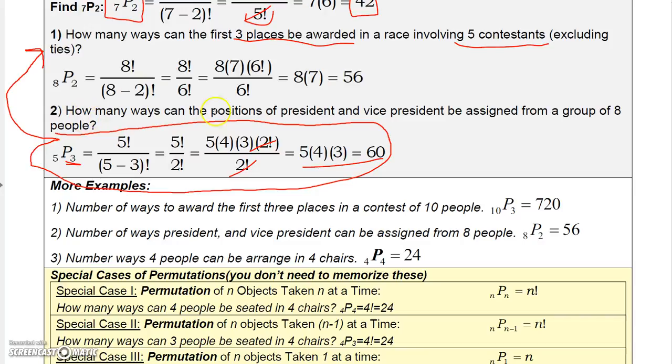Now, the next one says, how many ways can the positions of president and vice president be assigned from a group of eight people? I can't assign the same person to both positions, so repetition is not allowed. And order would matter because if A is president and V is vice president, then wouldn't it be different if B was president and A was vice president, even though we're using the same two people? The order does matter here because we're assigning them to positions. Since we're assigning them to positions, it forces the order to matter. I had these backwards.